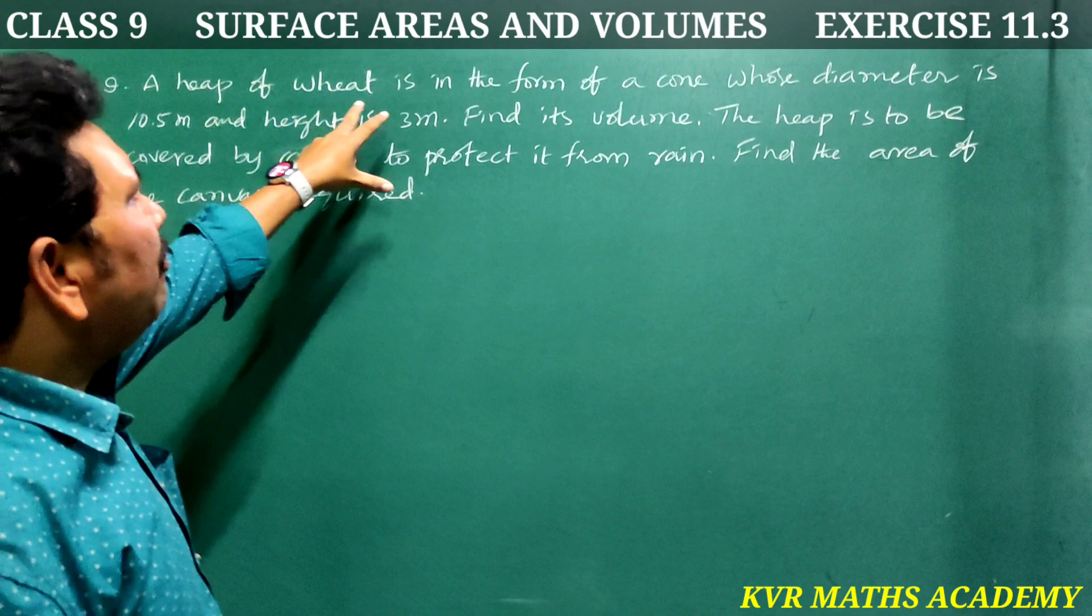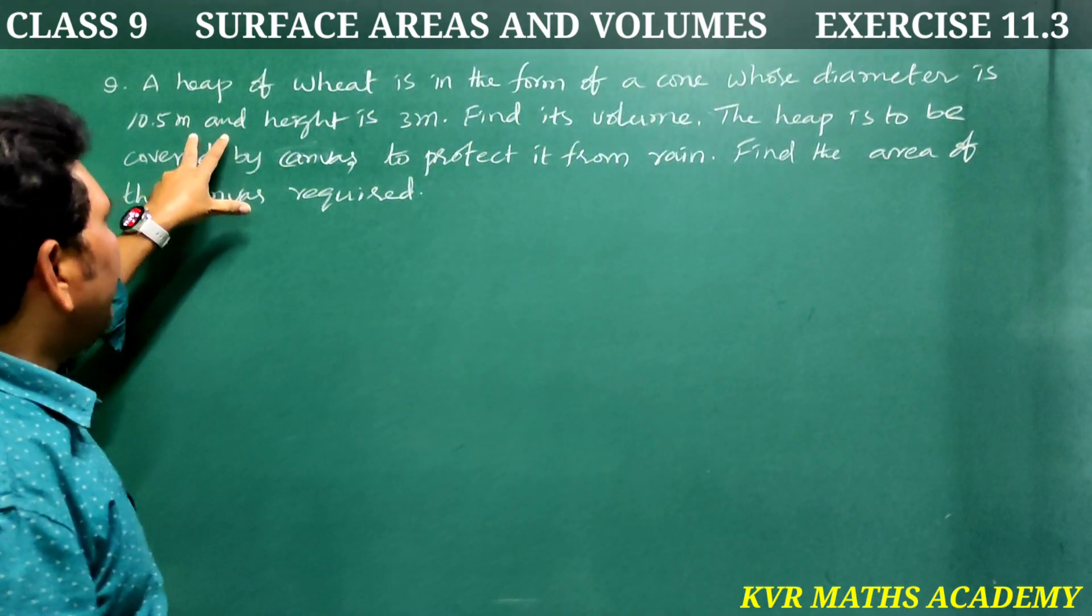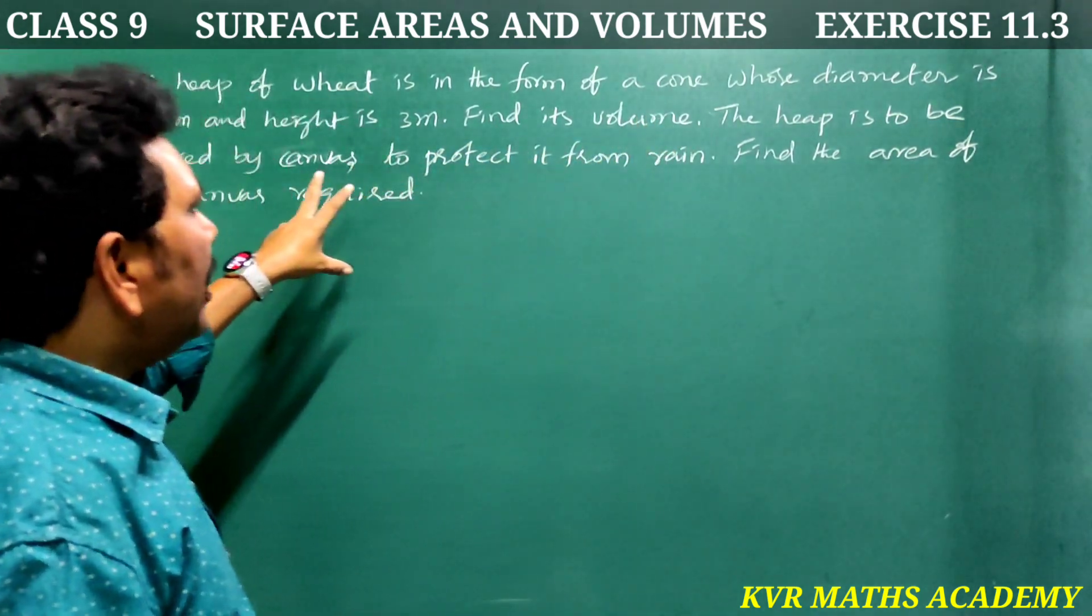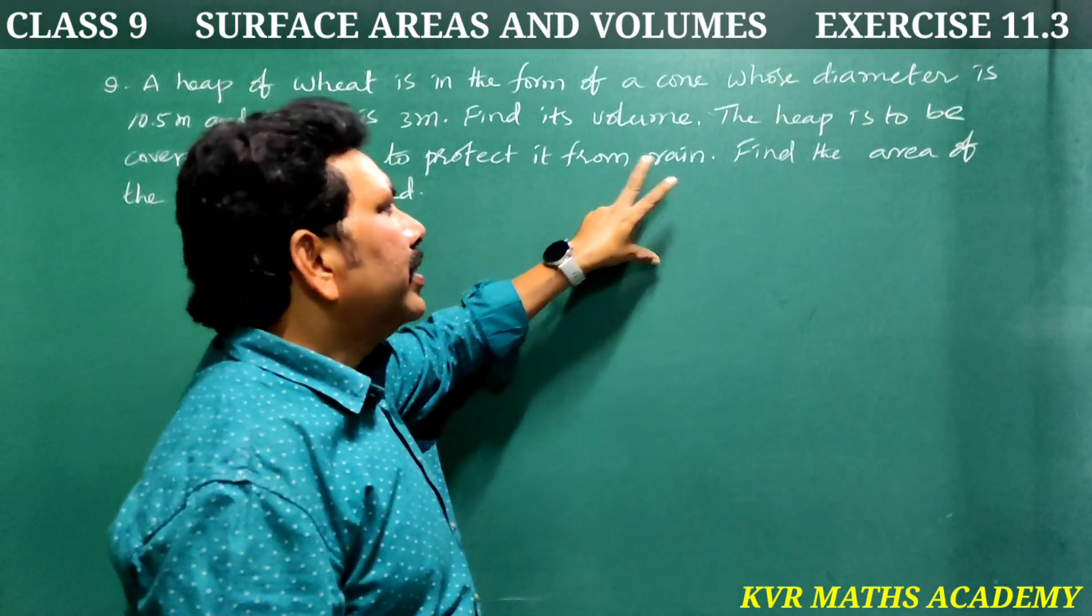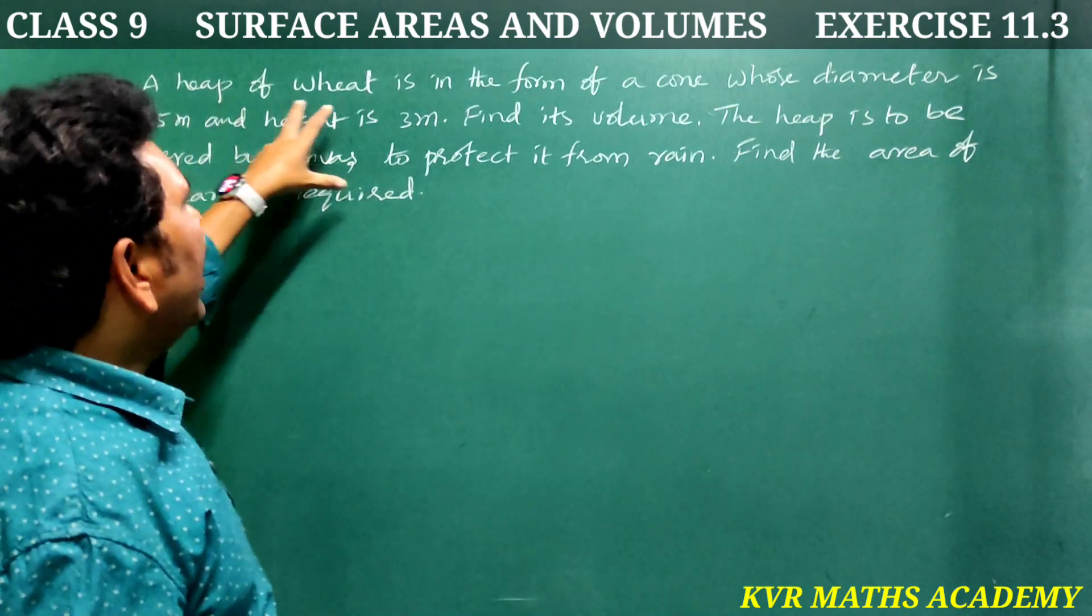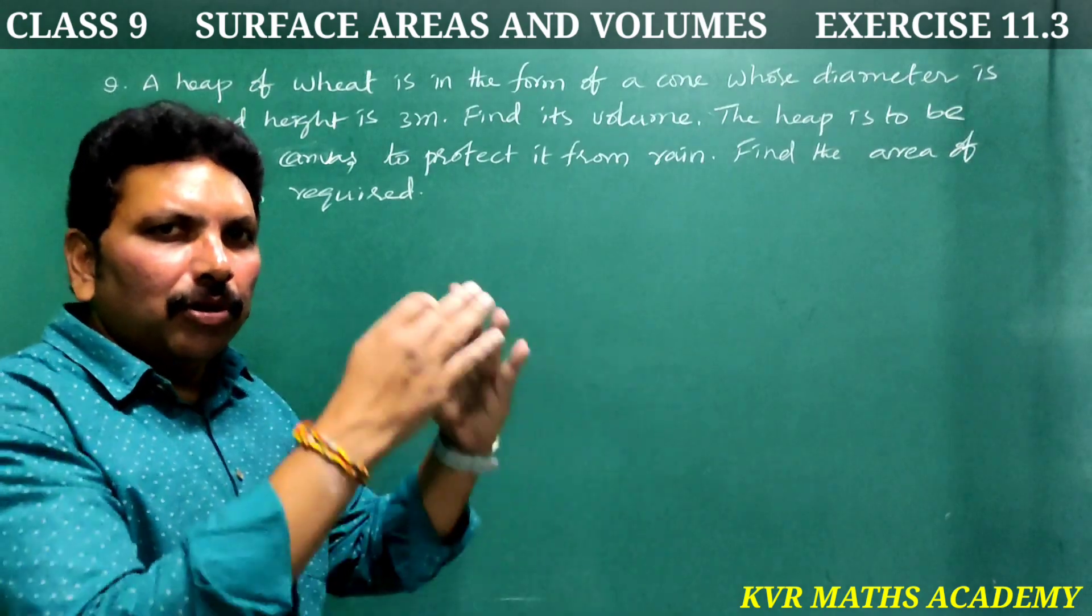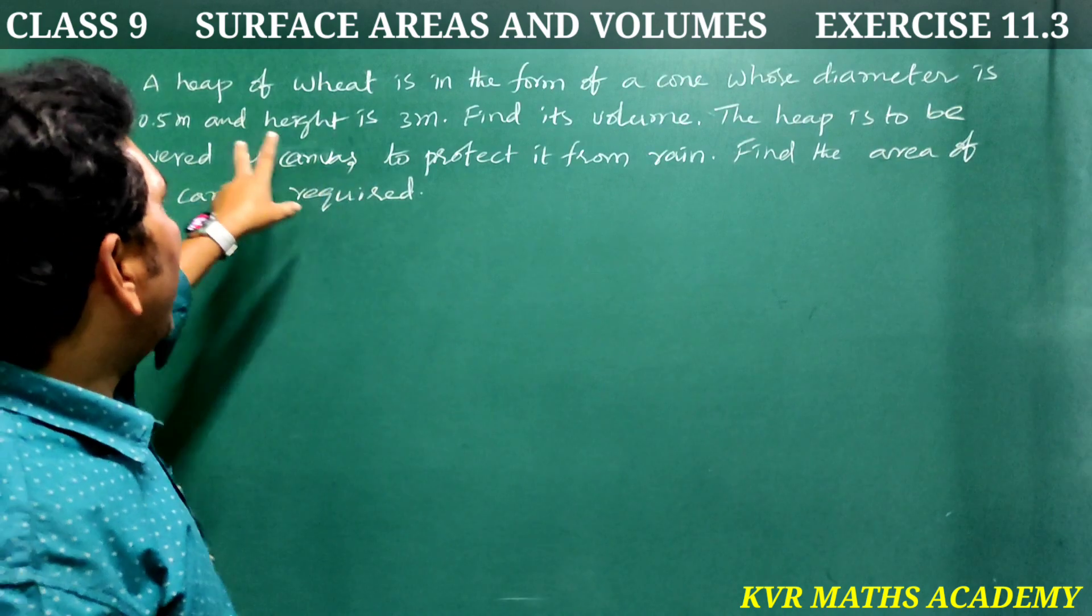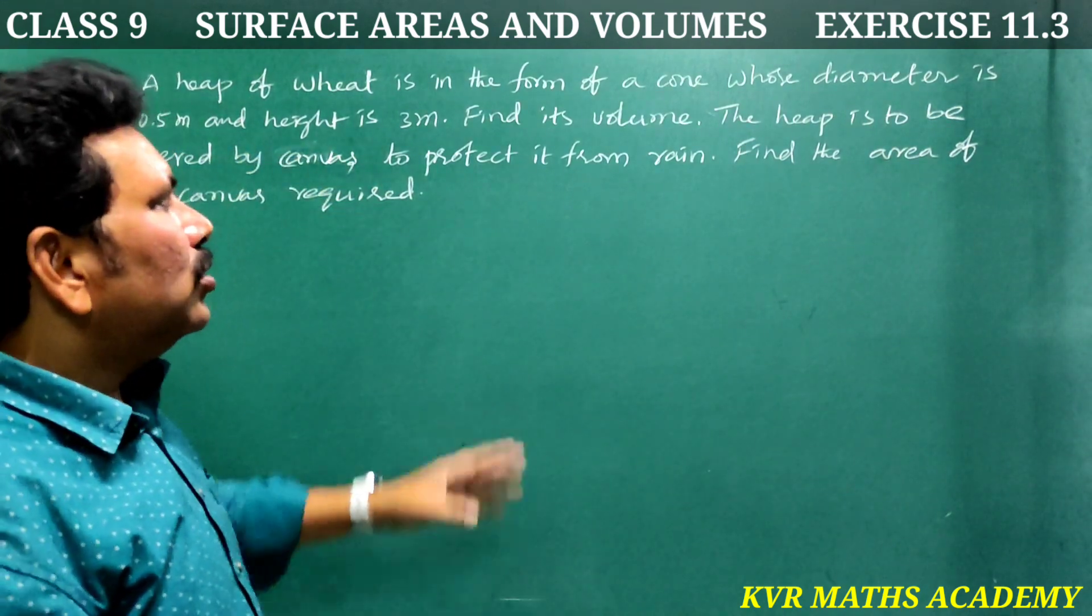Question 9: A heap of wheat is in the form of a cone whose diameter is 10.5 meters and height is 3 meters. Find its volume. The heap is to be covered by canvas to protect it. Find the area of canvas required.